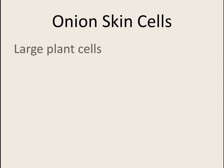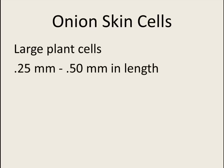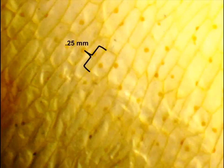Onion skin cells are large plant cells, at least compared to other plants. They are about 0.25 millimeters to 0.50 millimeters in length. Here's a picture that I took through a microscope of some onion skin cells. Let's say that this cell here is 0.25 millimeters long — one quarter of a millimeter.